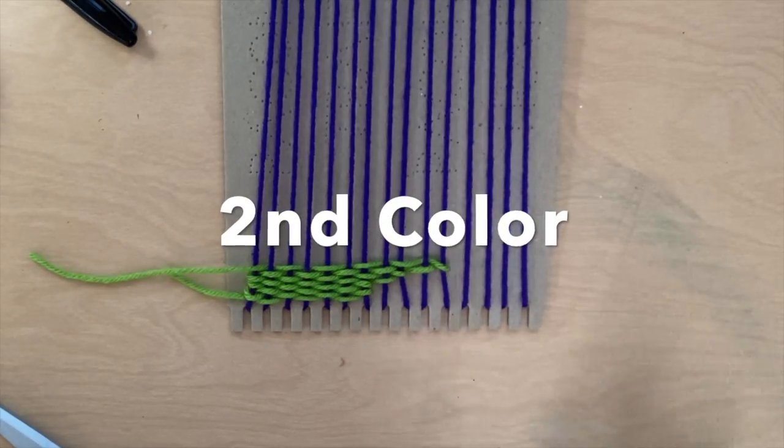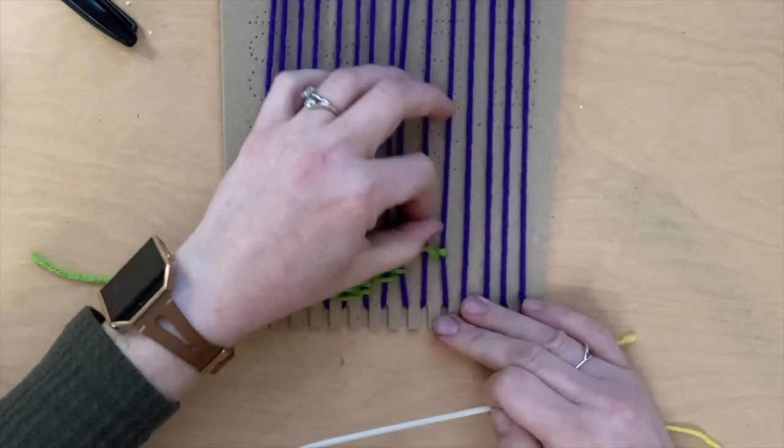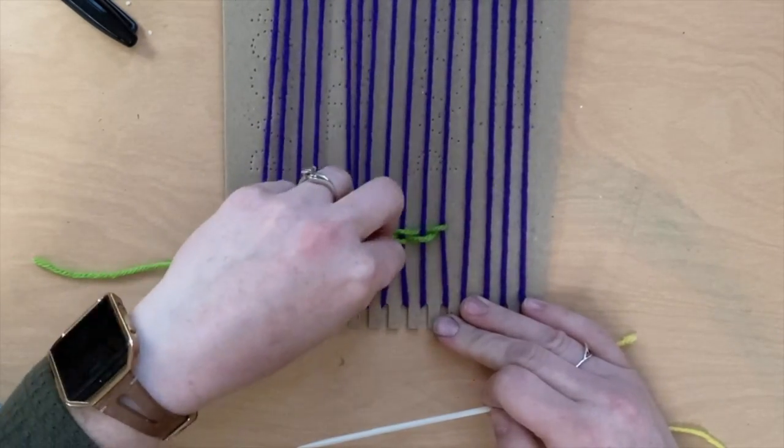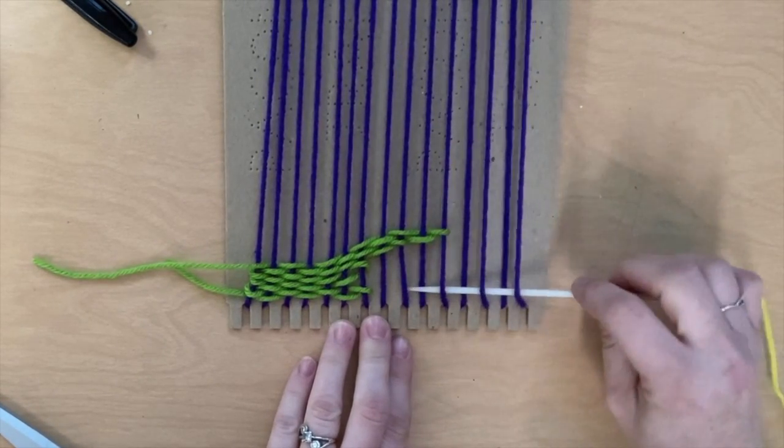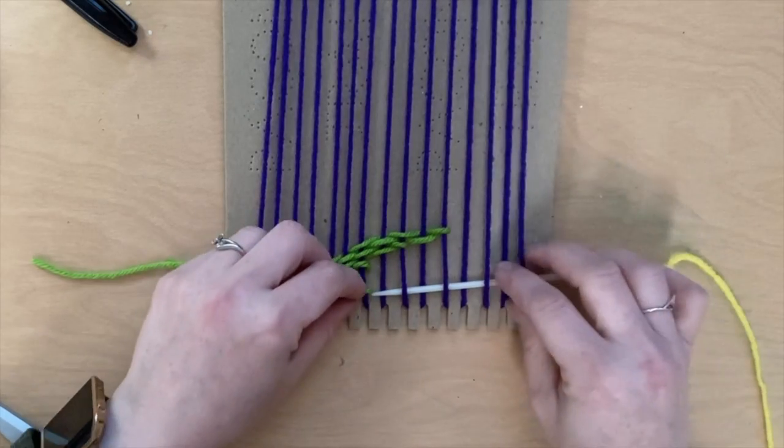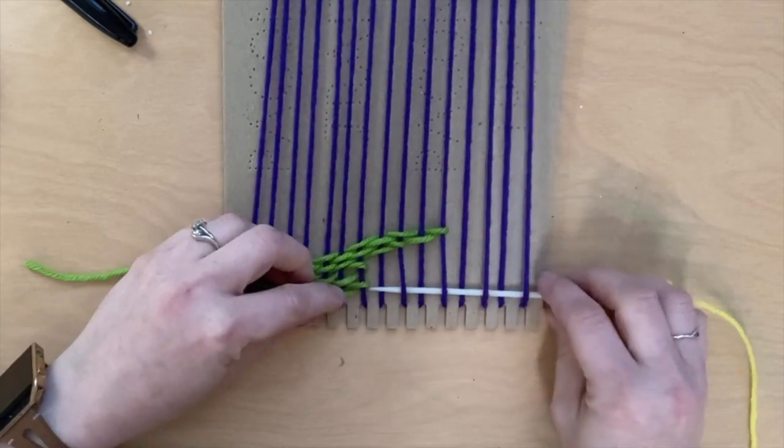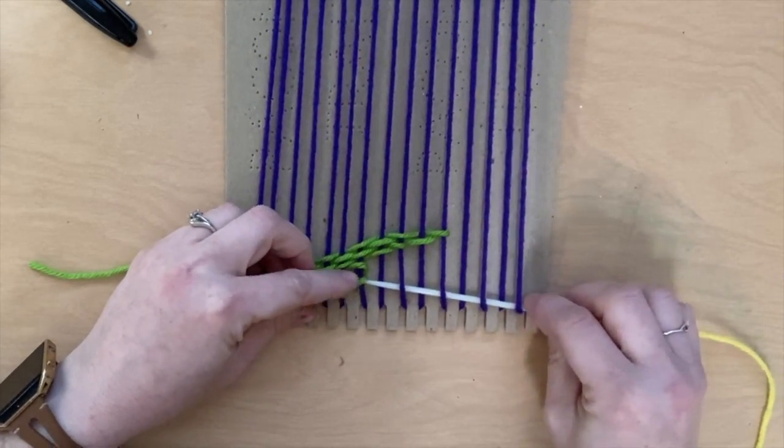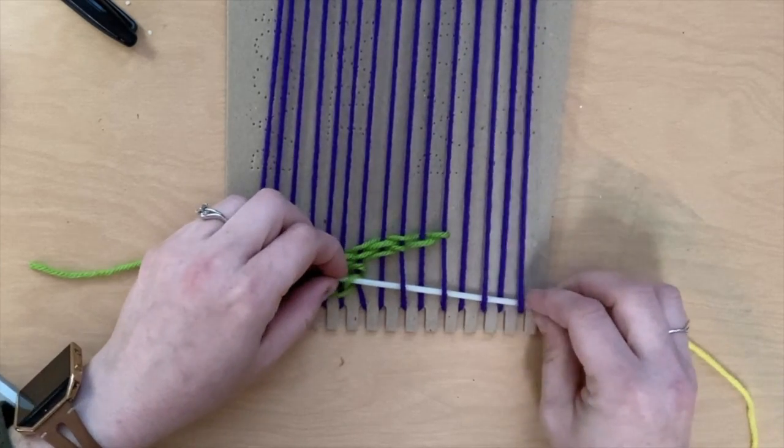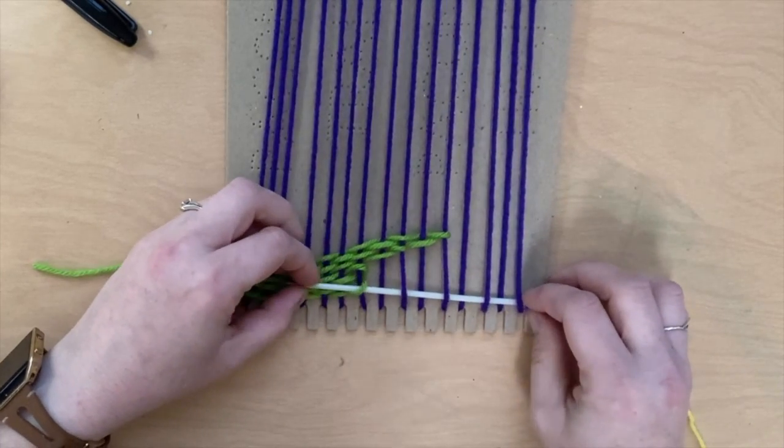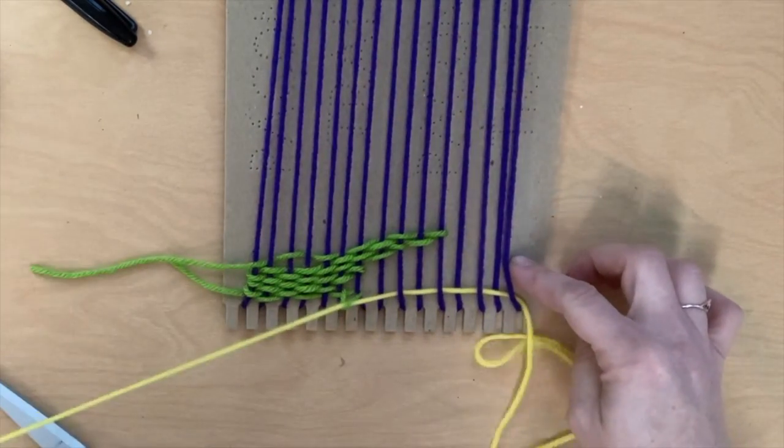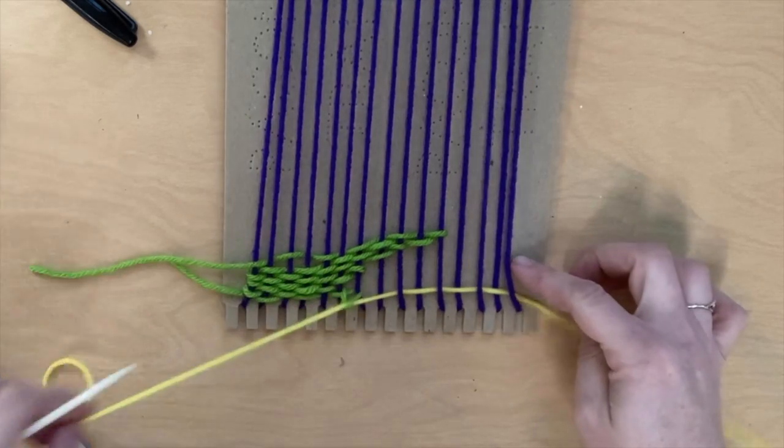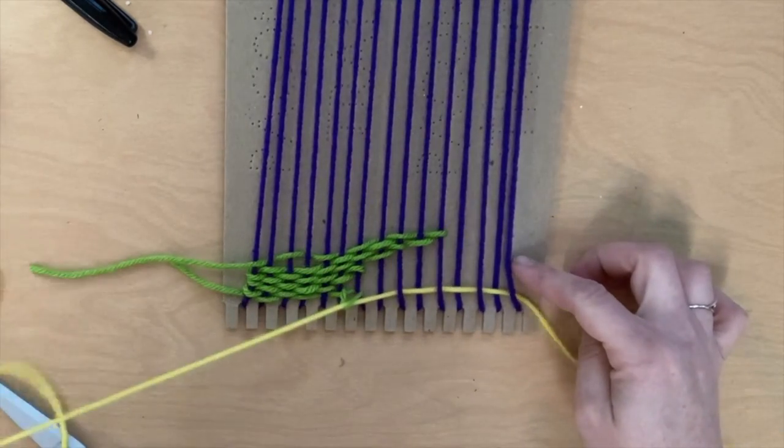When beginning your second color, start on the opposite side where your warp threads are bare. I chose to push mine up so it was easier to see in the video—this may help you as well. This time when sliding your needle through, go through the loop of that first row. My needle is going through the green, pulling all the way to the end.